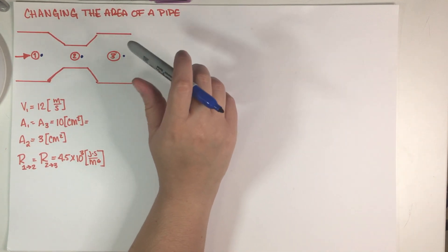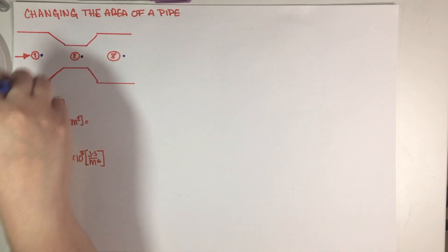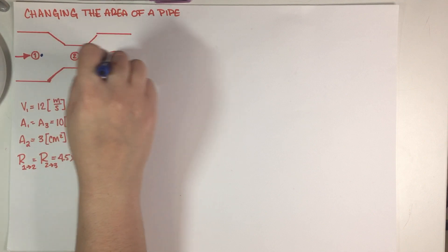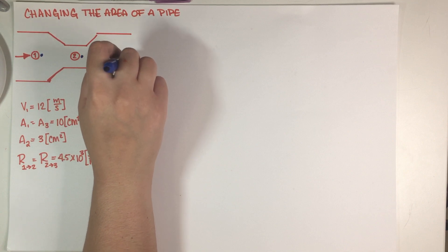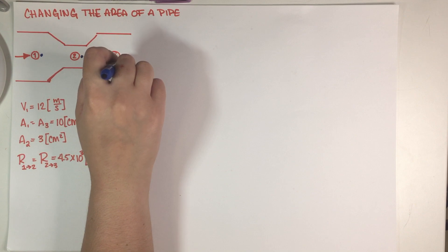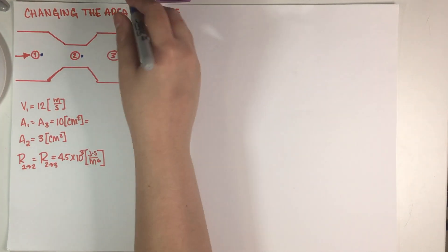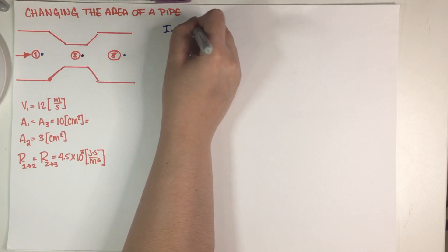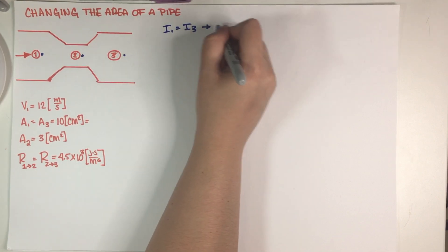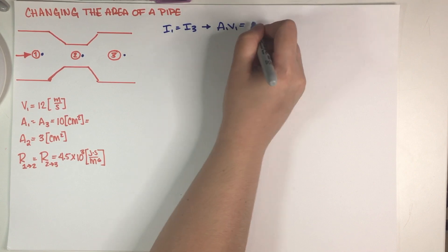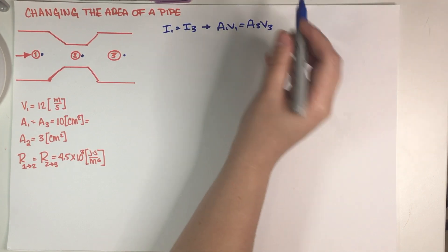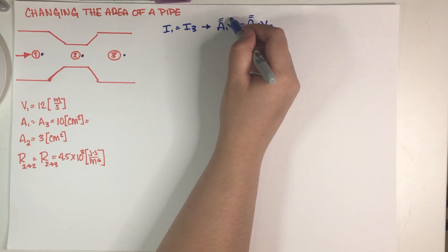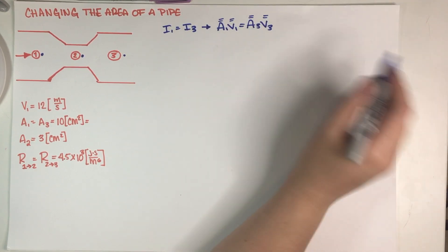For starters, this problem is telling me that these areas are exactly the same and because area is the only indicator for velocity in the Bernoulli equation, if the areas are the same then the velocities are the same. Another way to look at it is if you think about the continuity equation, what goes in, if the area is the same, if the area has to go out then this means that A1 V1 is equal to A3 V3, and if the areas are the same then that means that the velocities must be exactly the same.